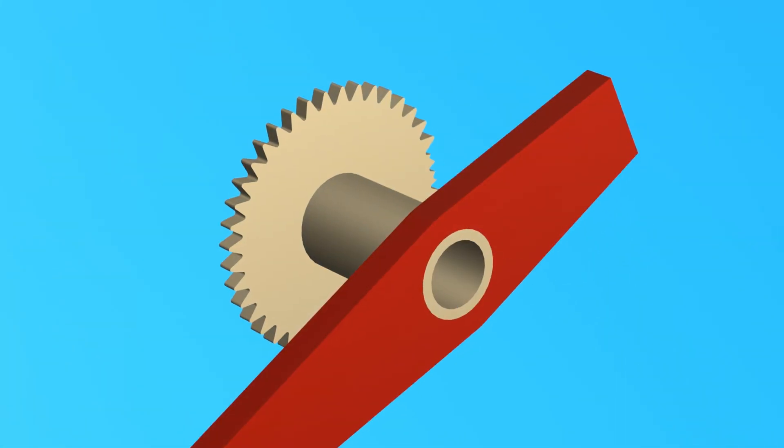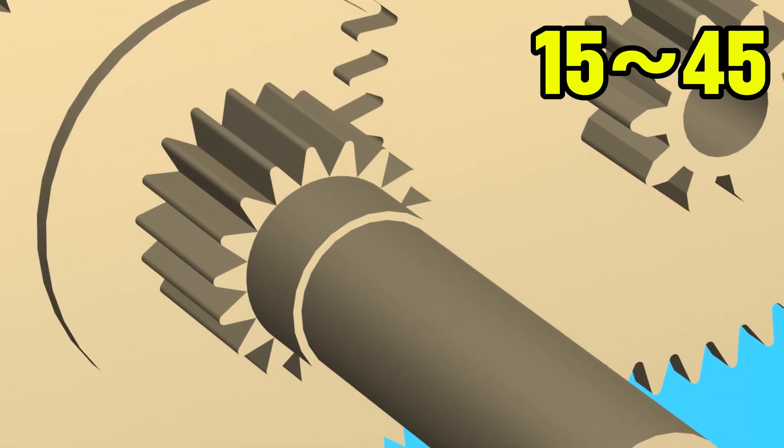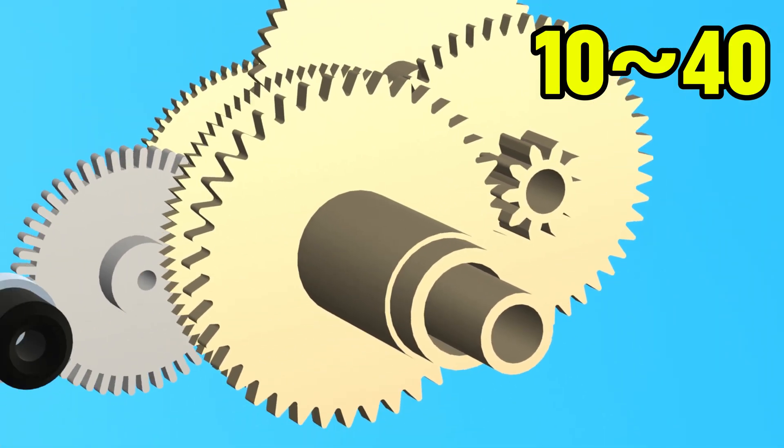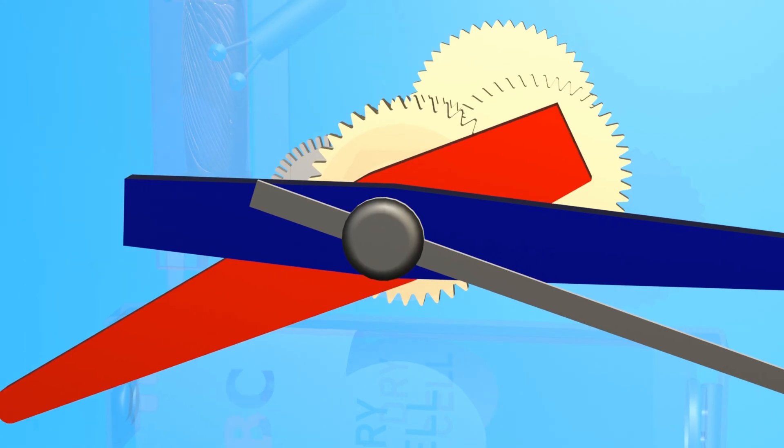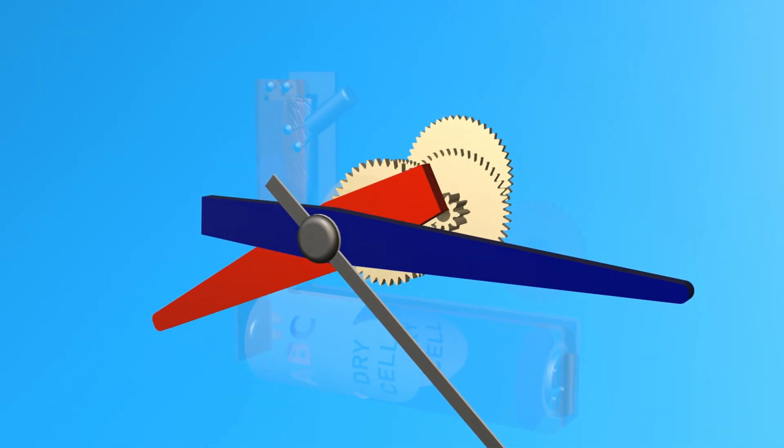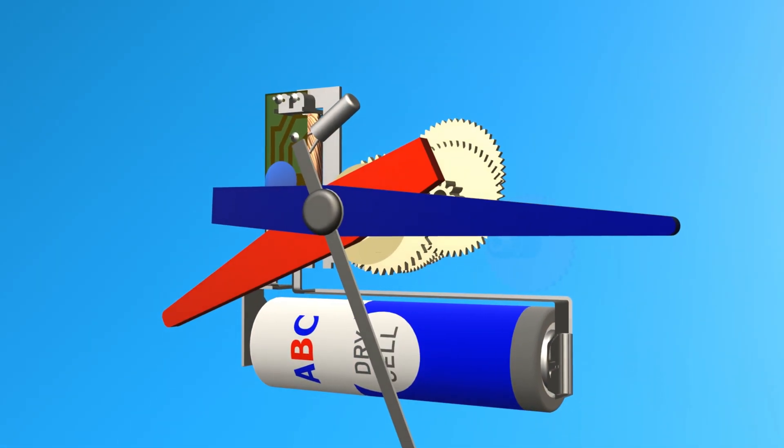Finally, the hour hand is driven via a 15 to 45 reduction to the idler, and a 10 to 40 gear reduction, to produce 1 rotation every 12 hours. As a result, we have 3 shafts rotating to which the hands of the clock are mounted, each rotating at different speeds.